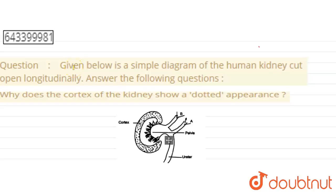Hello all, so here the question is: Given below is a simple diagram of human kidney cut open longitudinally. Answer the following questions: Why does the cortex of kidney show a dotted appearance?